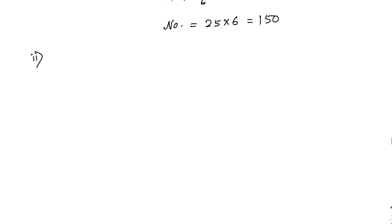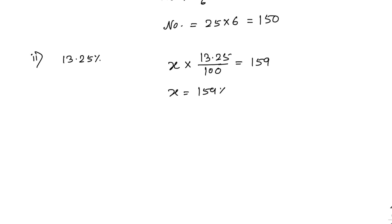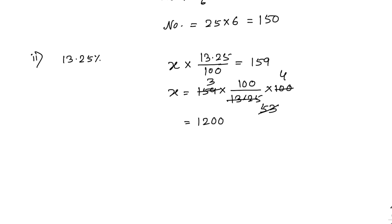Next: 13.25 percent of a number is 159. Let the number be x. Then x into 13.25 by 100 equals 159, so x equals 159 into 100 by 13.25, which equals 15900 by 13.25. Simplifying: 13.25 equals 1325 by 100, and dividing gives x equal to 1200 as the final answer.